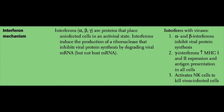There are three types of interferons that you need to know: alpha, beta, and gamma. Alpha and beta are grouped into what we call type 1 interferons, and gamma is a type 2 interferon. All of these are proteins that place uninfected cells in an antiviral state.